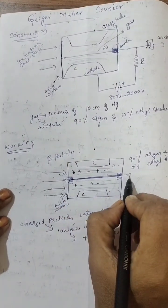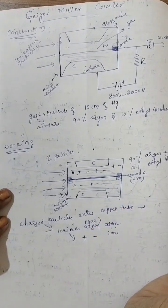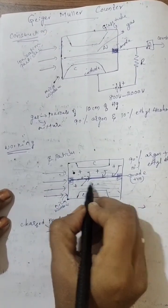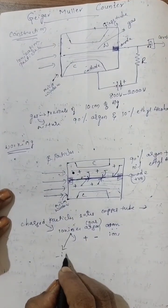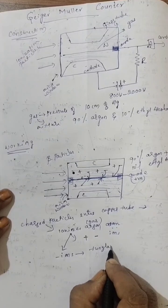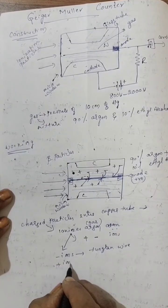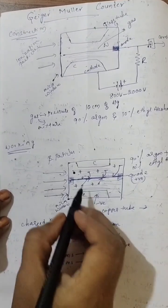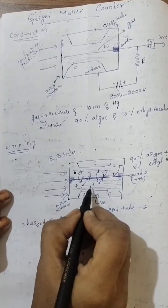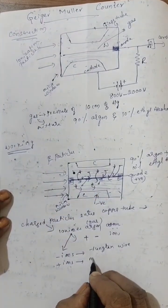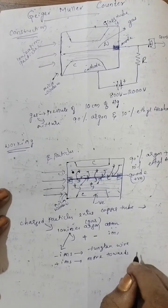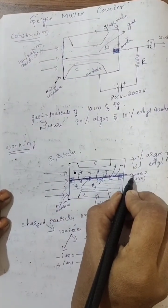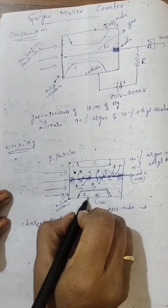The tungsten wire is acting as anode because we connected the positive terminal of the battery. So all electrons or negative ions will be attracted towards this tungsten wire. Negative ions move towards the tungsten wire. The copper tube is connected to the negative terminal of the battery, so it acts as cathode. All positive ions move towards the copper tube or cathode. And all electrons move towards the tungsten wire.